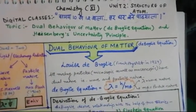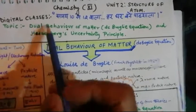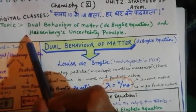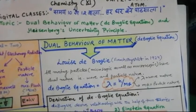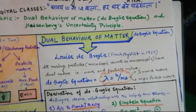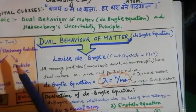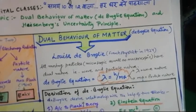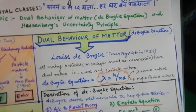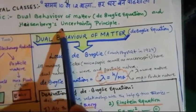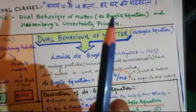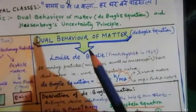Before starting this topic, let me recap a little bit and tell you why we are going to study this. As we studied in the limitations of Bohr's model, one limitation was that a serious blow to Bohr's theory came from certain new principles such as the de Broglie relationship and Heisenberg uncertainty principle. According to Bohr's theory, an electron follows a fixed circular path with definite energy, and both its position and direction can be well defined. However, these two principles state that the path of an electron is not definite — it is of a probable nature.